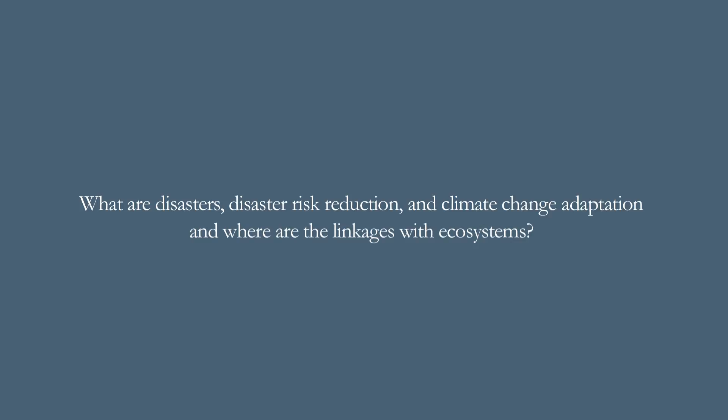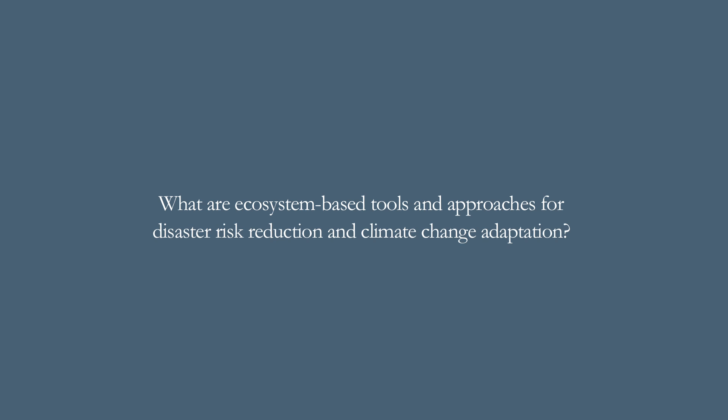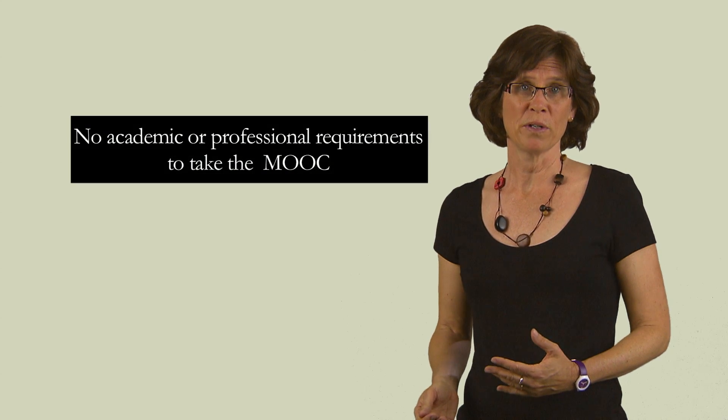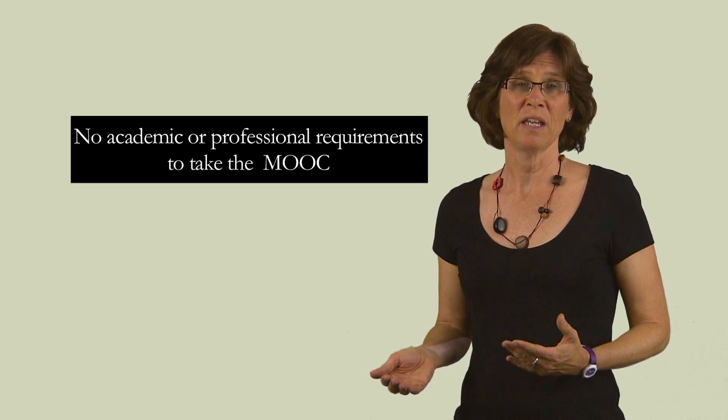As you follow our course, here is what we will cover: What are disasters, disaster risk reduction and climate change adaptation, and where are the linkages with ecosystems? What are ecosystem-based tools and approaches for disaster risk reduction and climate change adaptation? What do we mean by resilience in the context of disaster risk reduction and climate change adaptation? What are the key international agreements, organizations and initiatives related to disaster risk reduction and climate change adaptation? There are no prerequisites for taking this course, just some curiosity and an open mind.